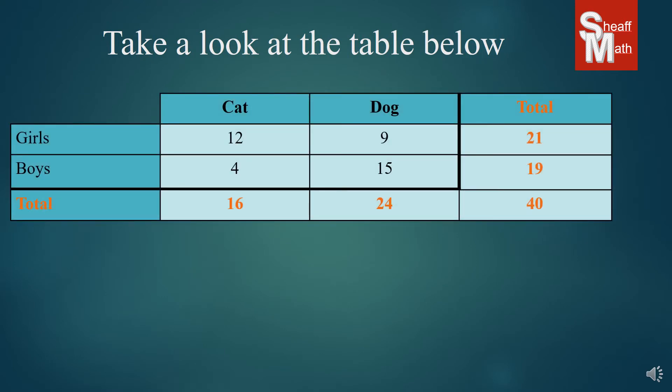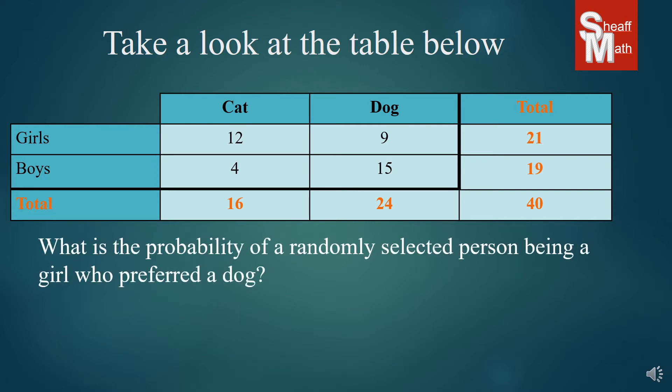Now looking at this same one again you might get a question like this: What is the probability of a randomly selected person being a girl who preferred a dog? So the first thing we do is we look at the girls row and we look at the dogs column and we find the number that matches those two conditions: nine. Now it says of all of the randomly selected person, that means they're talking about out of all of those surveyed, how many were girls that preferred dogs, and so there were 9 out of 40.